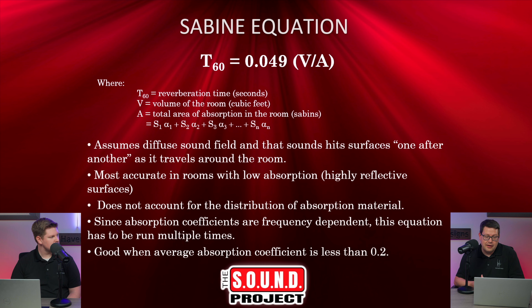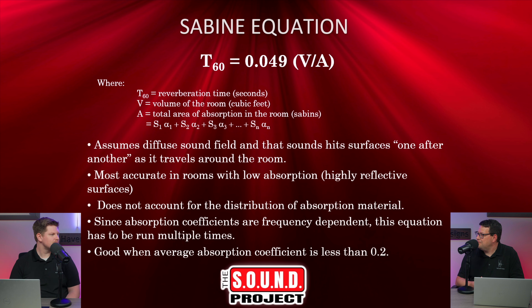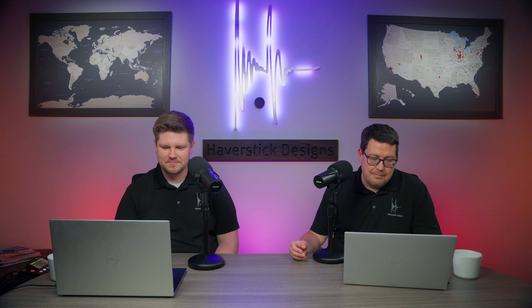One thing the Sabine equation does assume is a diffuse sound field, where sound hits surfaces one after another as it travels around the room, which isn't exactly how it works in real life. It's most accurate with rooms with low absorption — really highly reflective spaces with two to three second reverb times. When we simulate rooms with the Sabine equation and then go out and do measurements, it lines up most of the time. It's pretty amazing how well it still works.